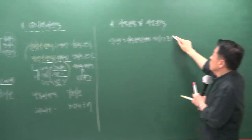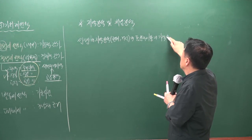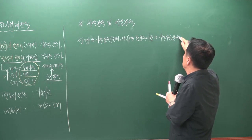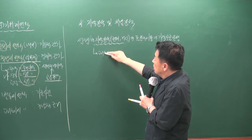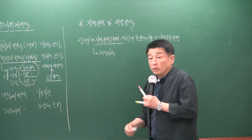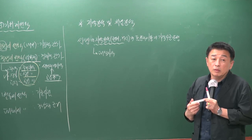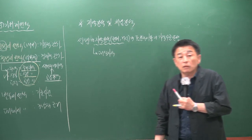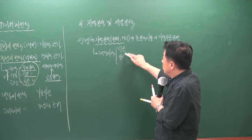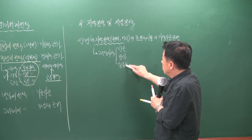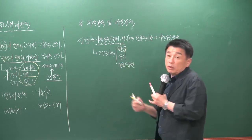지역 분석의 대상 지역에는 인근 지역, 유사 지역, 동일 수급권 등이 있습니다. 근래 시험에 자주 등장하는 것이 인근 지역입니다. 인근 지역은 대상 부동산이 존재하는 지역을 말합니다.